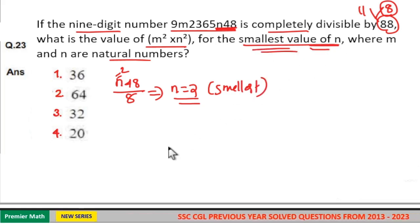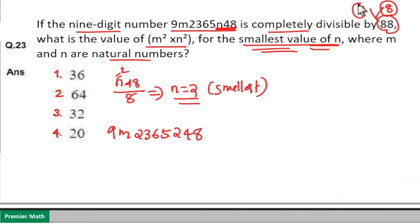Smallest possible value. Now n equals 2, which means 9m23652248 should be divisible by 11. Now check the divisibility rule of 11. So take the odd place sum and even place sum.